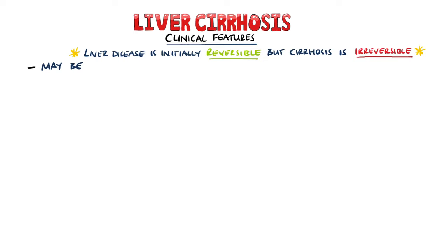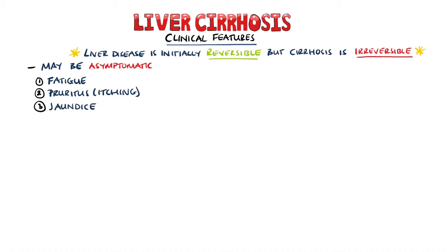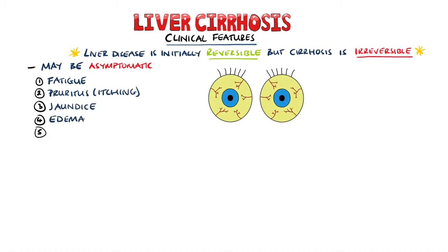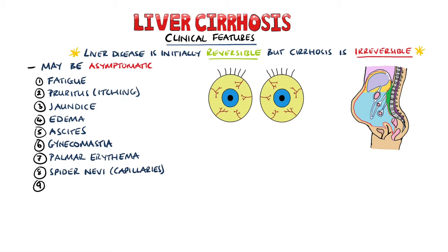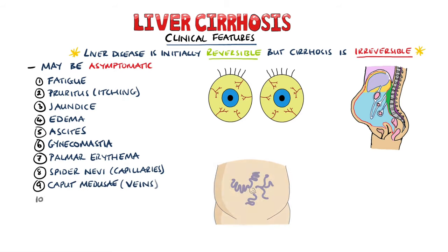The clinical features can vary. Initially liver damage is reversible, but cirrhosis itself is irreversible and may be initially asymptomatic. With disease progression, patients may have fatigue or pruritus — which is itching — due to the buildup of bile acid and release of endogenous opioids. They may have jaundice, peripheral edema, or ascites. Gynecomastia may be seen in males, as the liver plays a role in balancing testosterone and estrogen levels via sex hormone binding globulin production. Palmar erythema occurs for a similar reason, as well as nitric oxide release. You may also see spider nevi, a type of telangiectasis meaning swollen capillaries, and caput medusae, which are distended superficial epigastric veins that radiate from the umbilicus.